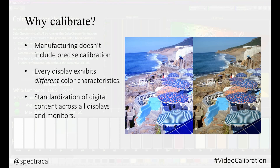Calibration is done in an effort to standardize digital content across all displays and monitors. Here is an example of what the image looks like on a non-calibrated white LED LCD display — the left image is overly blue and the right image is more natural and realistic looking.